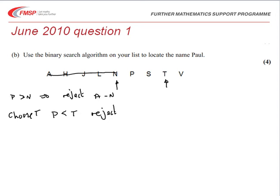So rejecting that T and V. Then again, looking at choosing the middle, which happens to be S, we can say that P comes before S. So we're going to reject S.